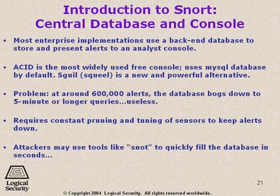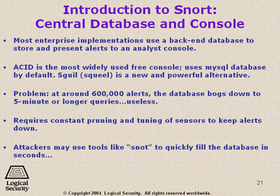Central database and console is one of the more used features of Snort. It can be done from the command line, but there are many tools that make it more user-friendly. Most enterprise implementations use a back-end database to store alerts and report current activity to an analyst's console. ACID (A-C-I-D) is the most widely used free console and GUI front-end to Snort. It configures to use a MySQL database by default and can turn Snort into a pseudo-enterprise class product. A newer product is Sguil (spelled S-G-U-I-L), a powerful alternative and newer preferred GUI front-end.